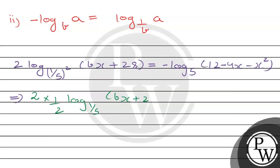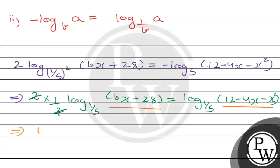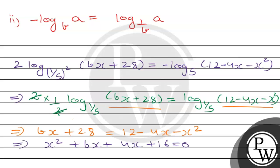After cancellation and simplification, we get log base (1/5) of (Bx + 28) = log base (1/5) of (12 − 4x − x²). This gives Bx + 28 = 12 − 4x − x², which simplifies to x² + (B + 4)x + 16 = 0.